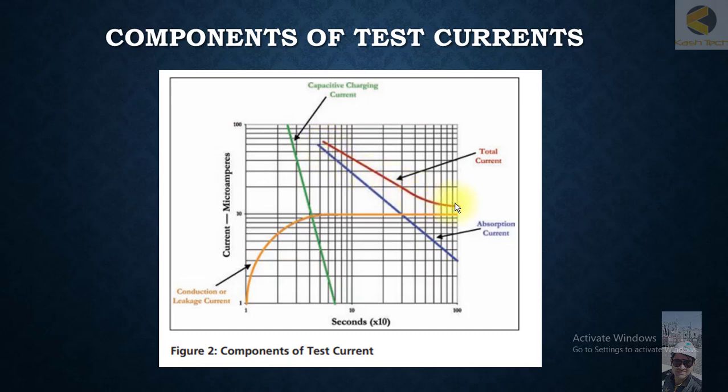This is the conduction or leakage current. With time, it's increasing and reaching near to the total current. This is the absorption current, which we are calling the polarization current. It will also take some time to decay.